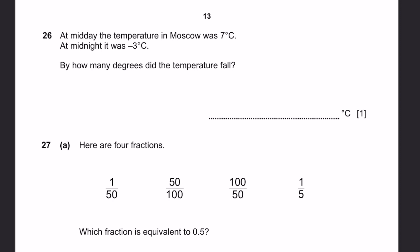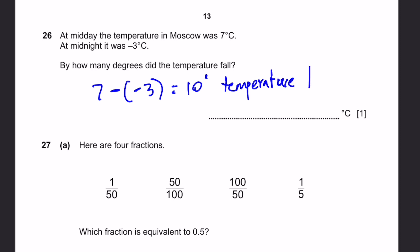Question 26. At midday, the temperature in Moscow was 7 degrees Celsius. At midnight it was negative 3 degrees Celsius. By how many degrees did the temperature fall? That means 7 minus negative 3 equals 10 degrees. The answer is 10 degrees Celsius.